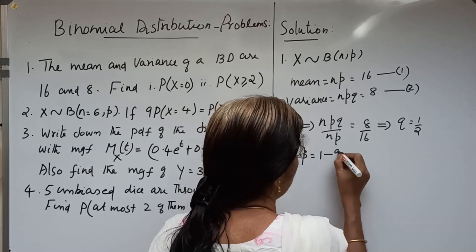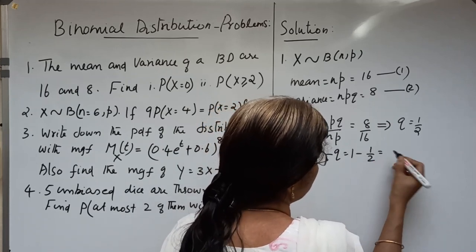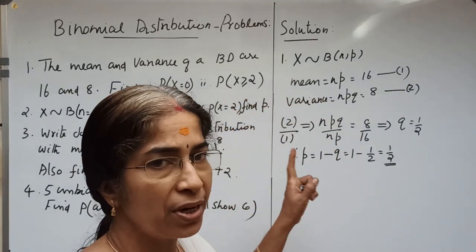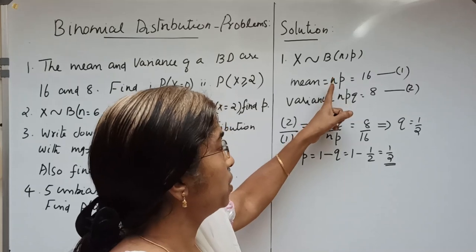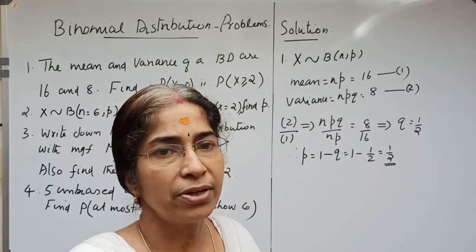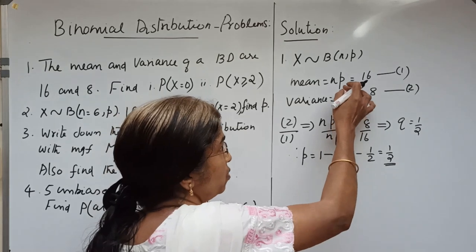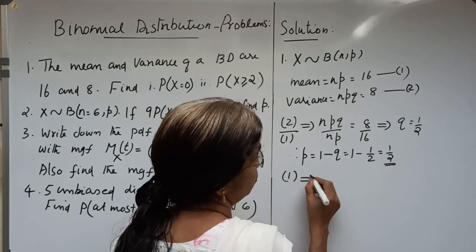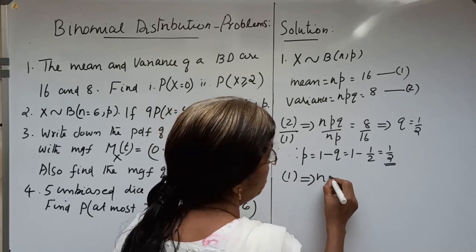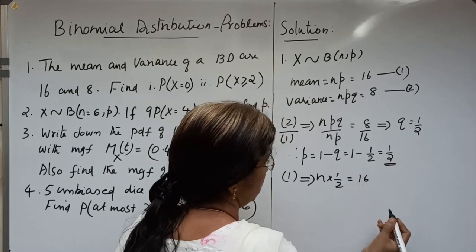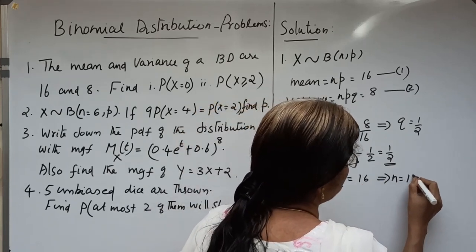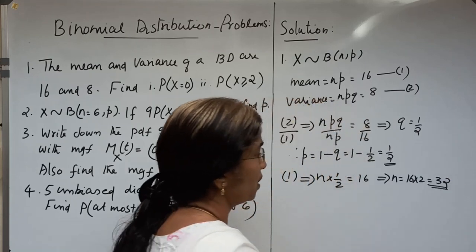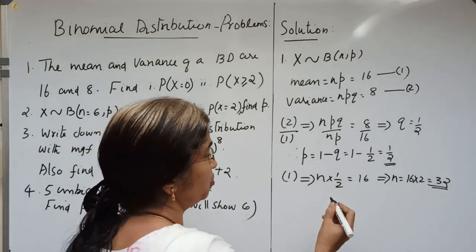Therefore P equal to 1 minus Q equal to 1 minus 1/2 equal to 1/2. Substituting P equal to 1/2 in equation 1, we get N into 1/2 equal to 16, which implies N equal to 32. So N equal to 32 and P equal to 1/2.